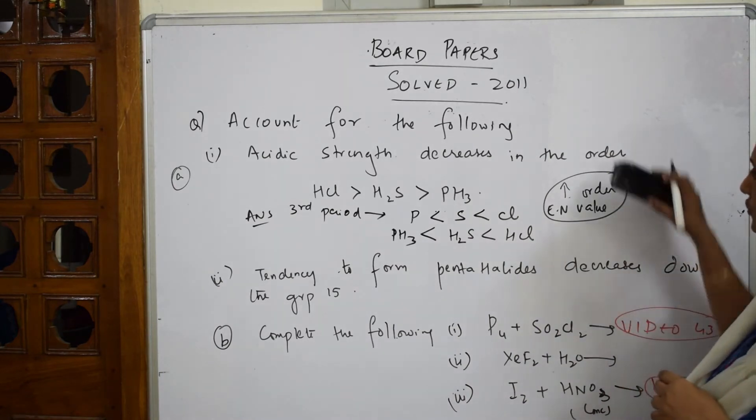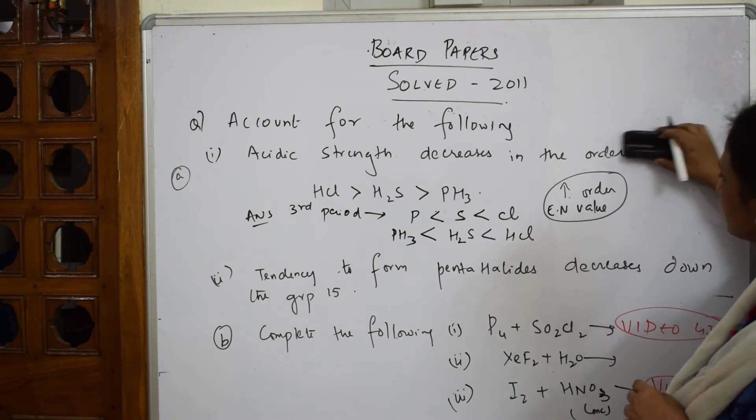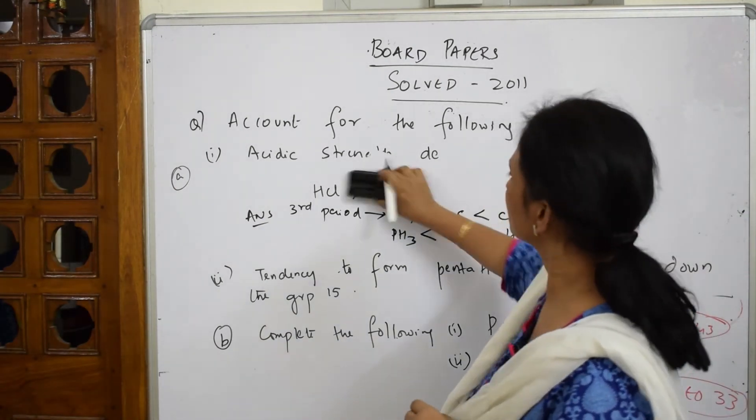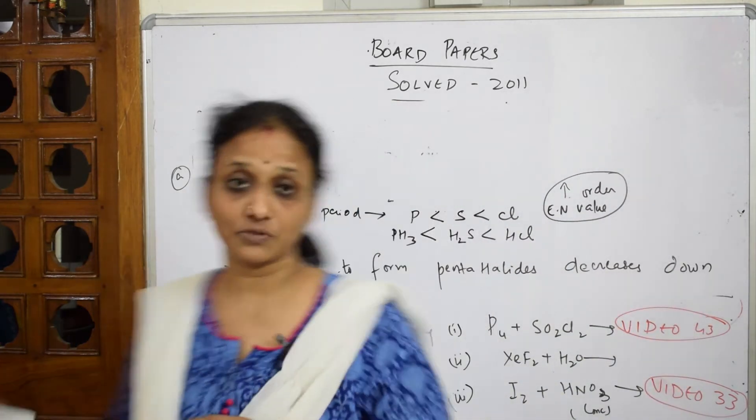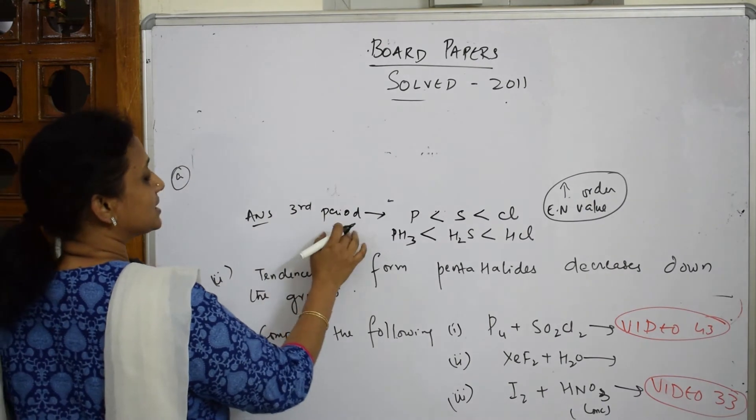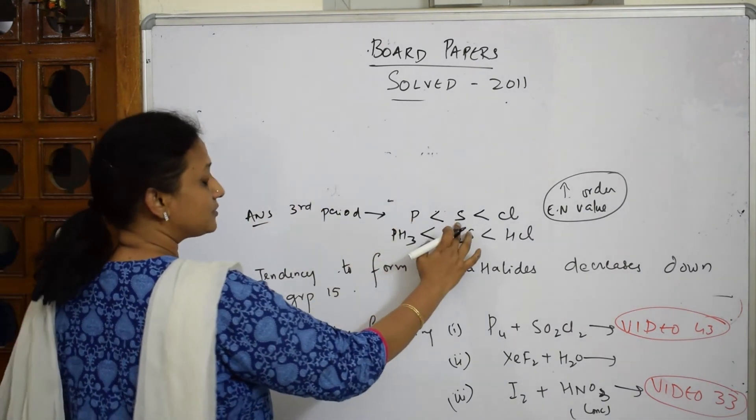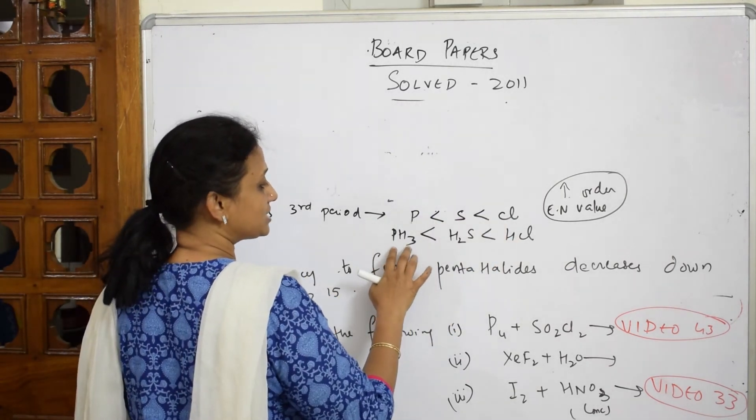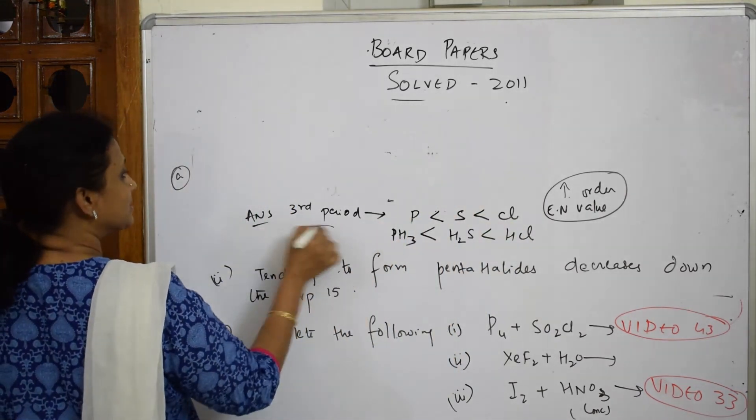Let me write the answer. I'm erasing this question. Let's write the answer. I don't have place so I'm using this part. What should you write? First write: phosphorus electronegativity is lesser than sulfur, which is lesser than chlorine.